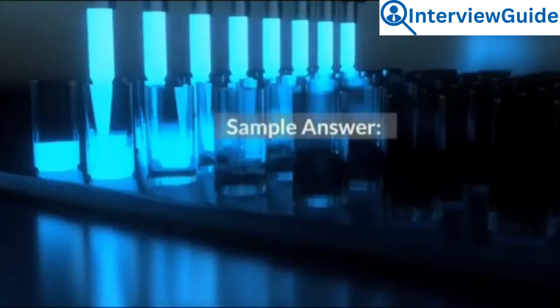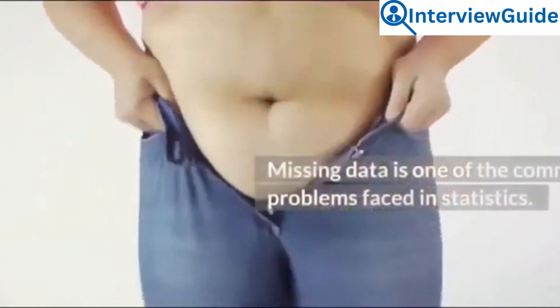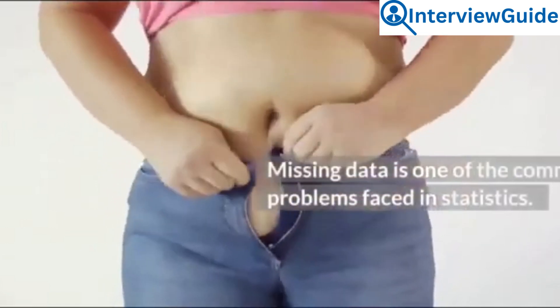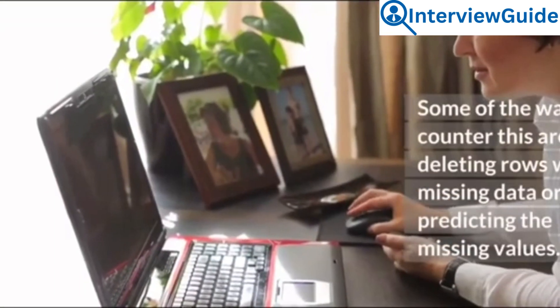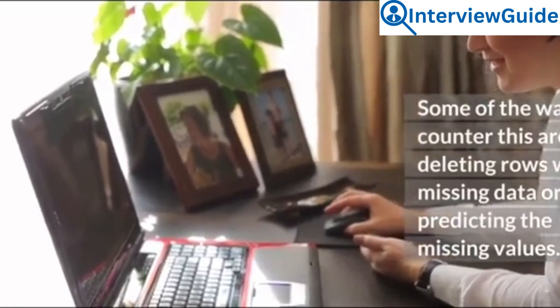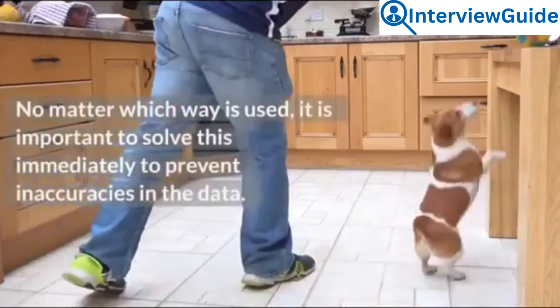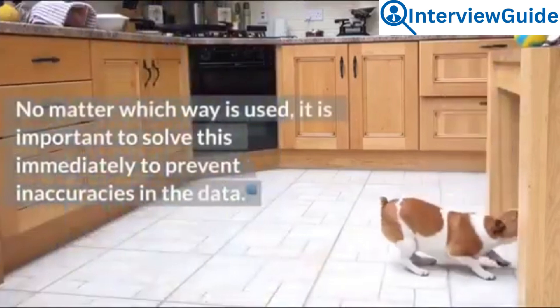Sample answer: Missing data is one of the common problems faced in statistics. Some of the ways to counter this are by deleting rows with missing data or predicting the missing values. No matter which way is used, it is important to solve this immediately to prevent inaccuracies in the data.